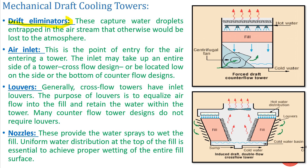Next is your drift eliminator. Some water goes away with the air because of the high-speed airflow — water droplets become entrained in the air stream and would otherwise be lost to the atmosphere. To stop those water droplets from escaping the cooling tower, we use drift eliminators. The drift eliminator is one of the important auxiliaries of a cooling tower and helps reduce the makeup water consumption.